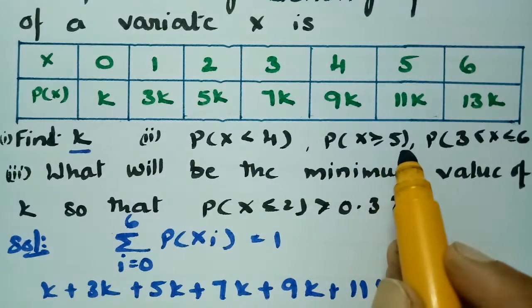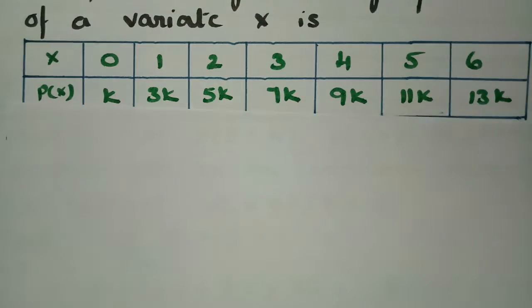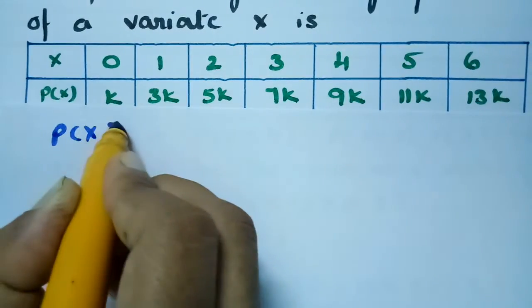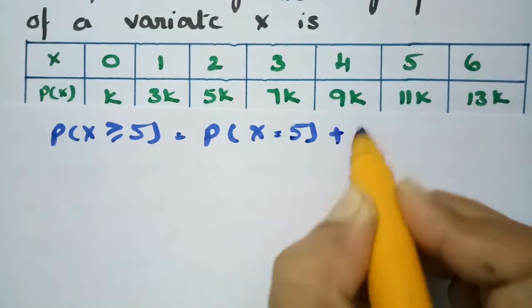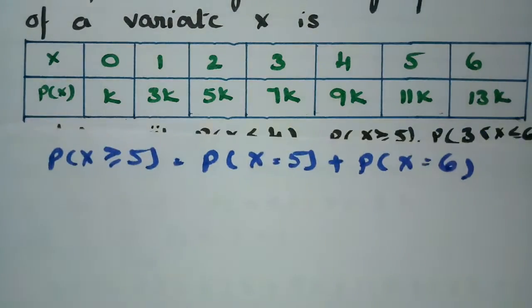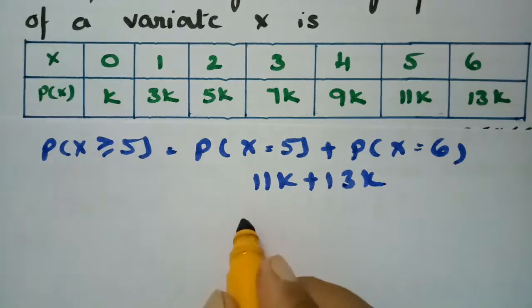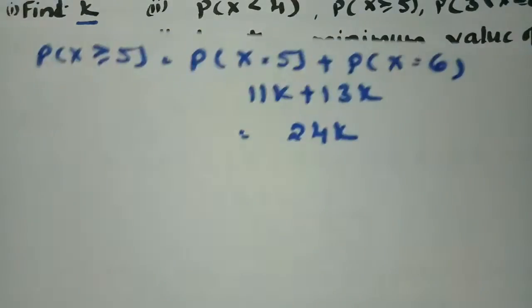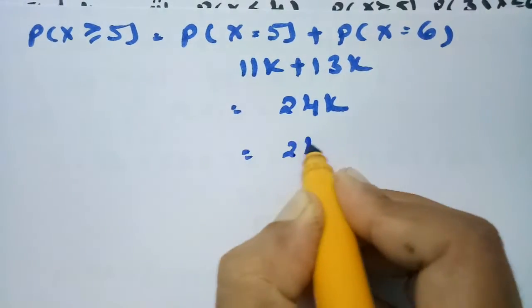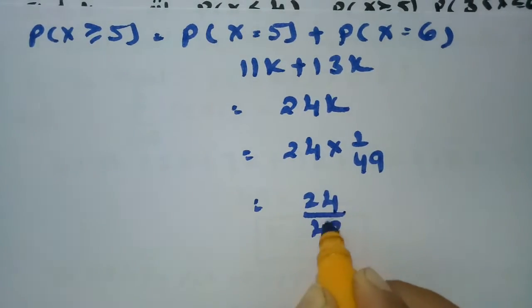Now we find the probability of x greater than or equal to 5, which means we add probabilities for x = 5 and x = 6. The probability of x = 5 is 11k and probability of x = 6 is 13k, giving 11k + 13k = 24k. With k = 1/49, this equals 24/49.